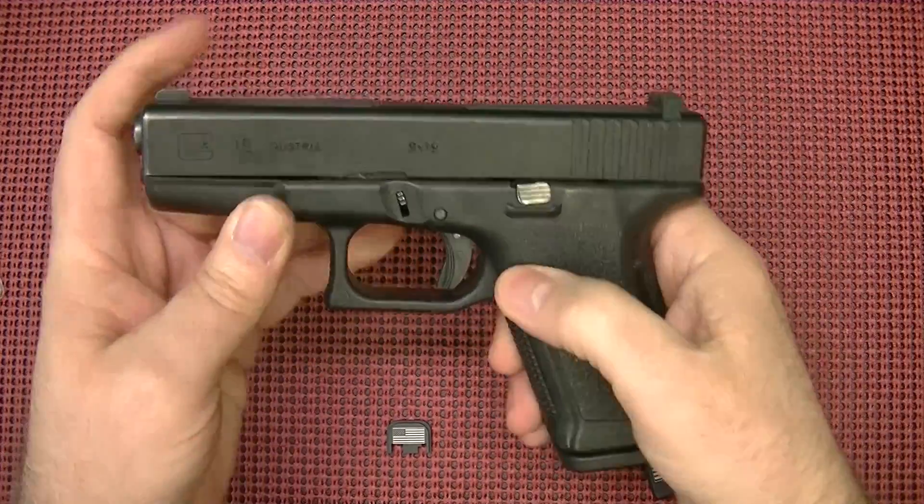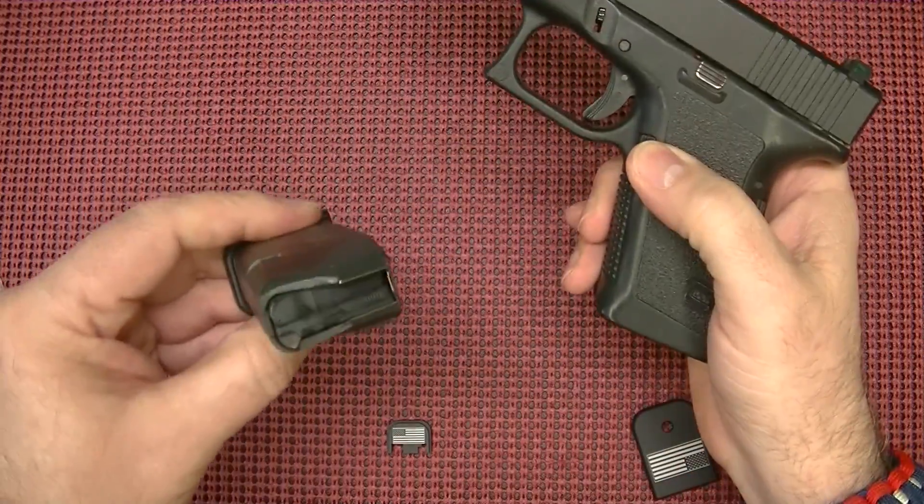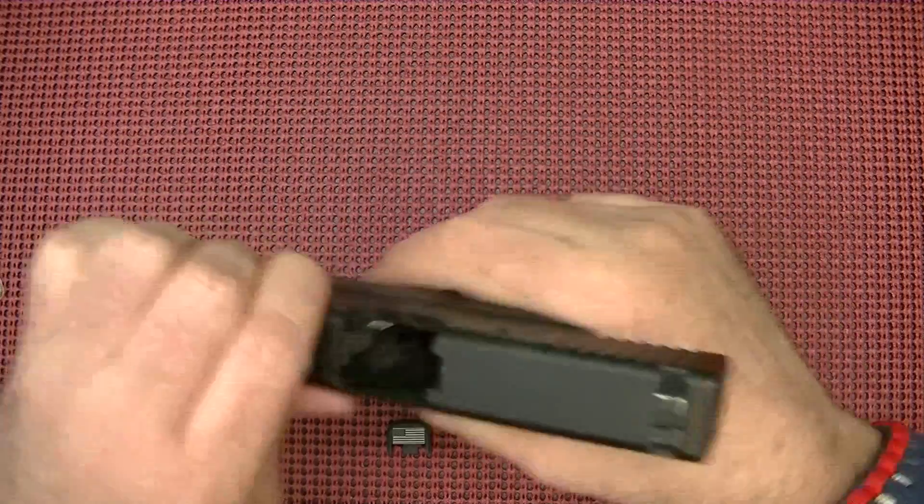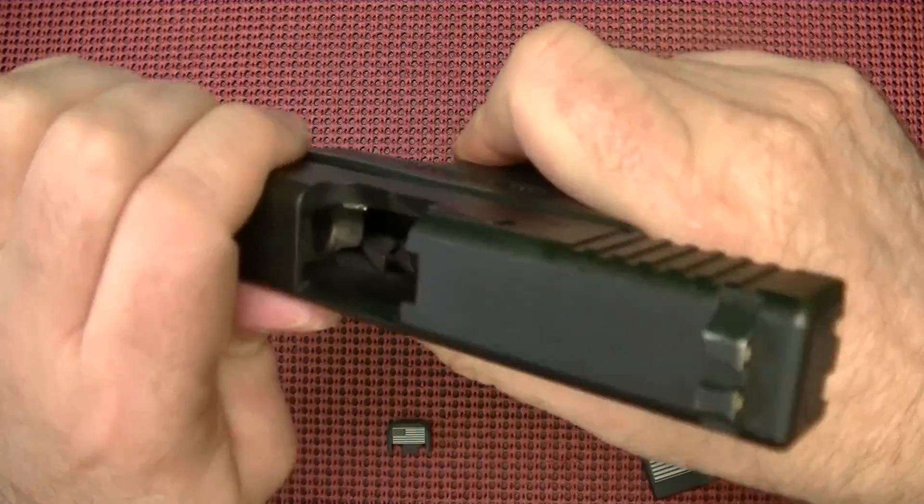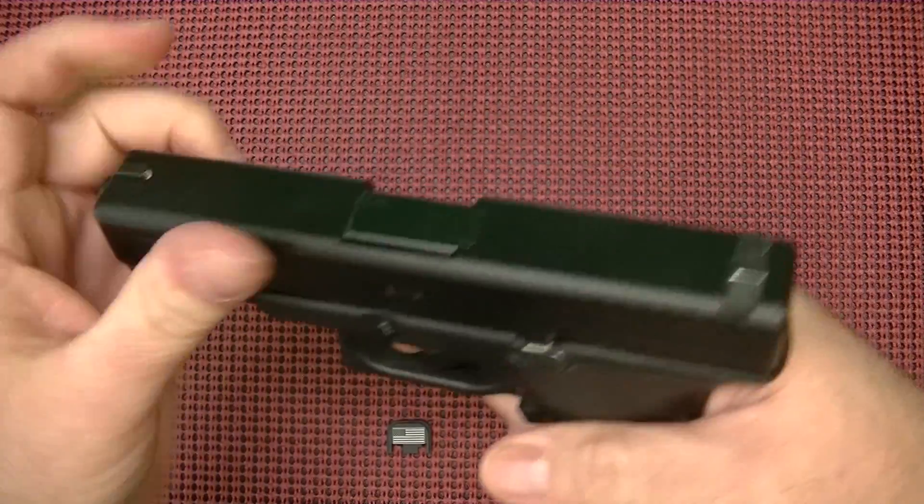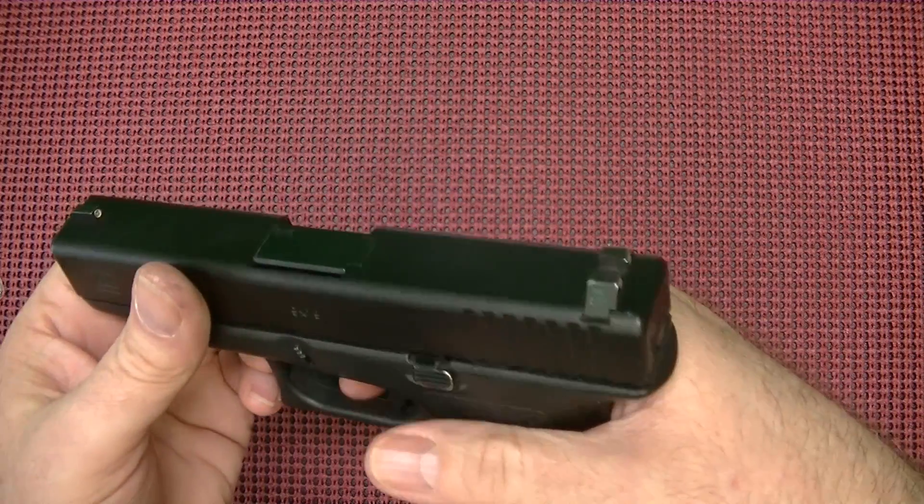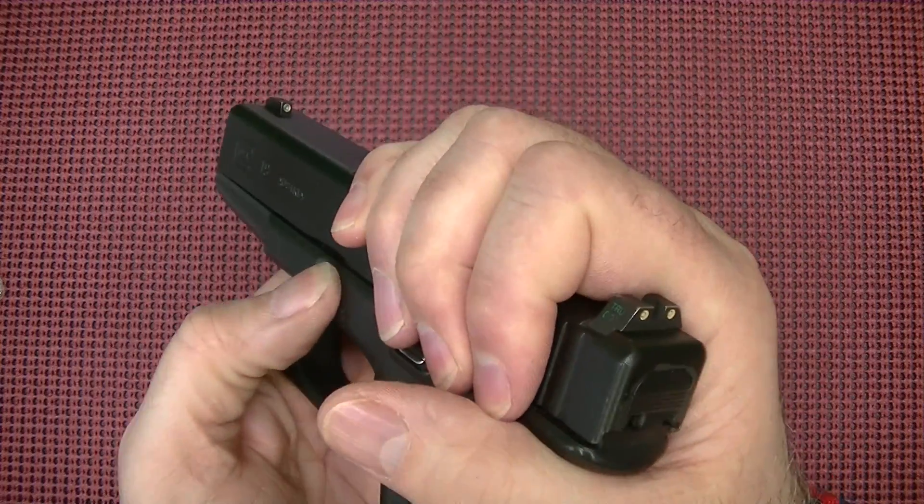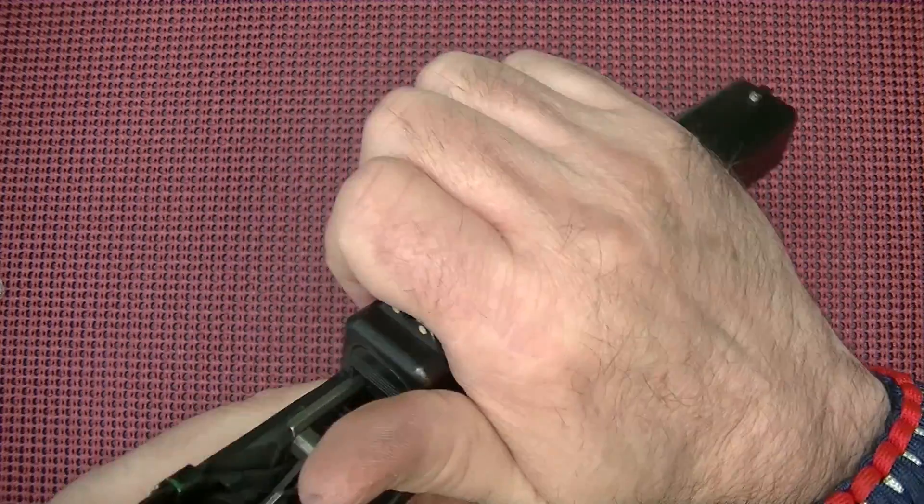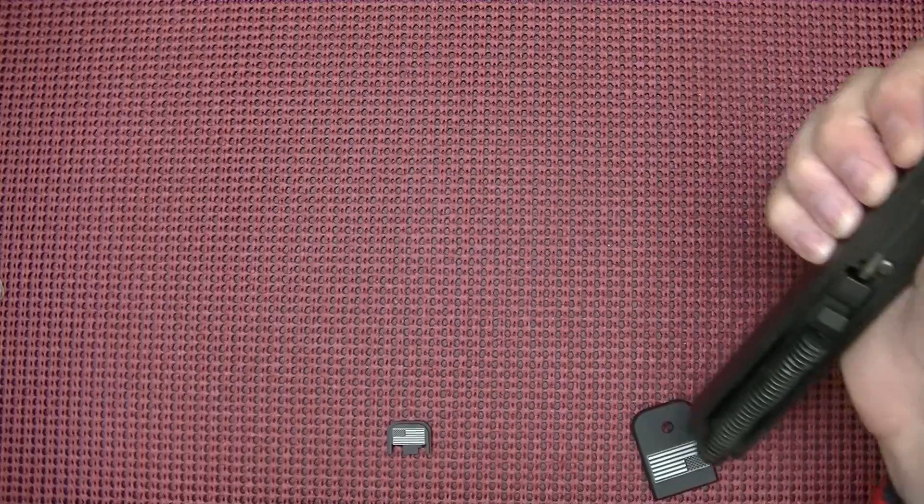Got a Glock 19 here. Magazine is empty. Gun is empty. Okay. You can do this with the slide on or off. The gun is just easier if you take it off, I think.